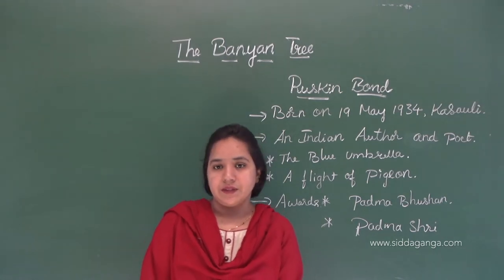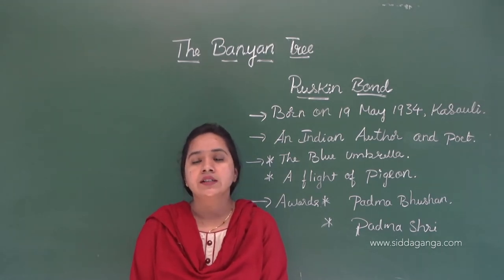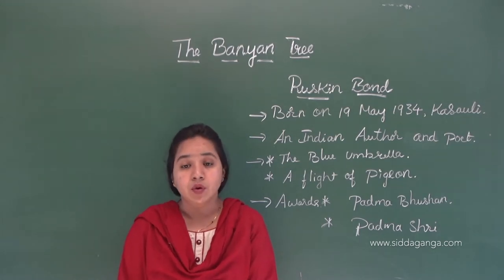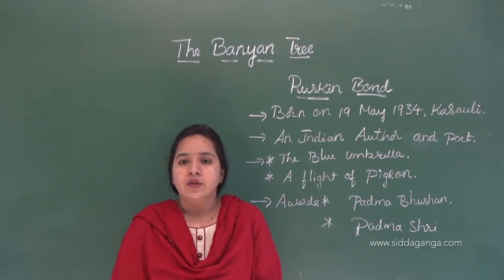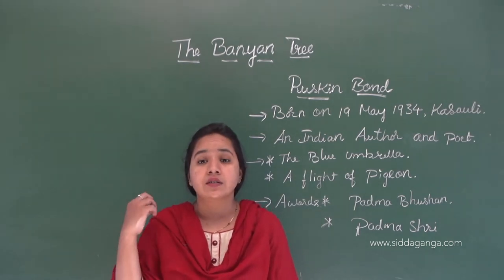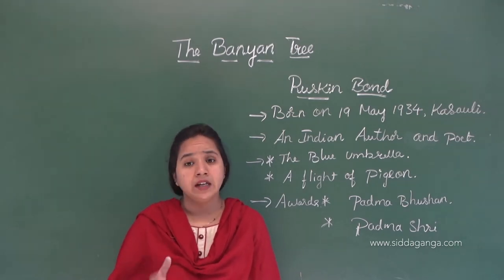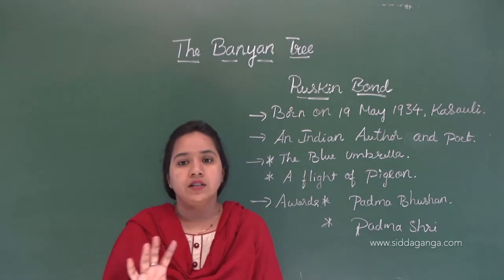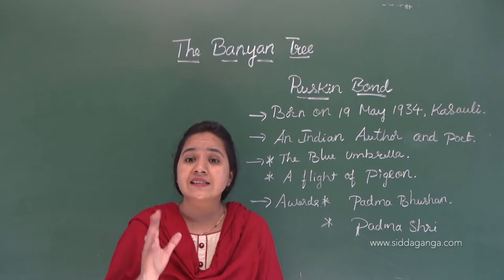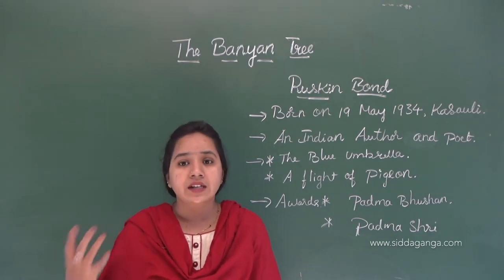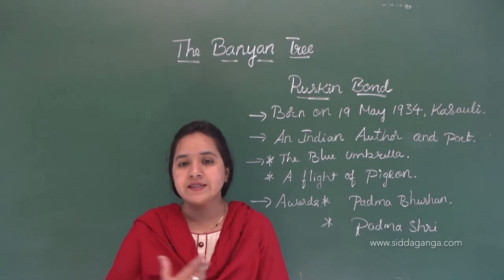So let's talk about this lesson, The Banyan Tree, written by Ruskin Bond. This story is about a mongoose and a snake called cobra. Whenever you hear of these two animals, they are ready to fight. The fight between a snake and a mongoose is a classical fight of India. It's not only recent days — it has been going on for so many years.